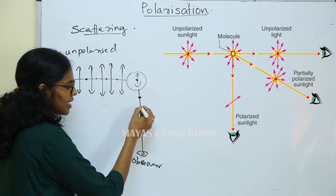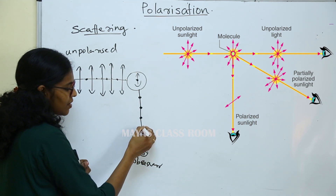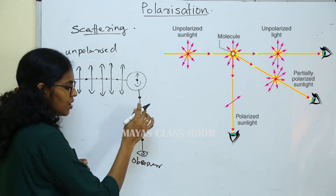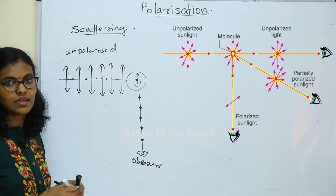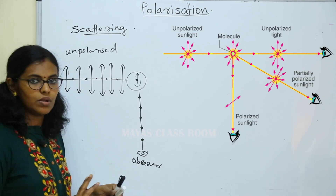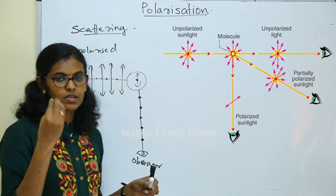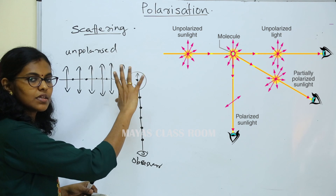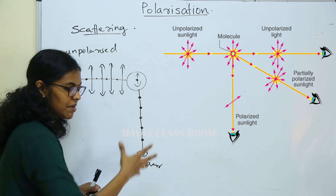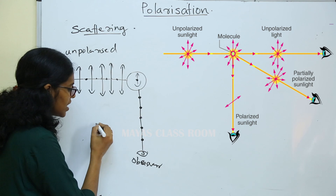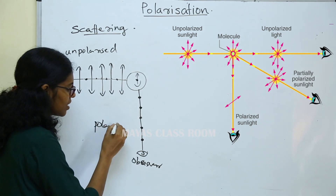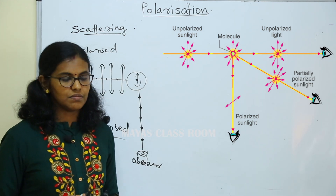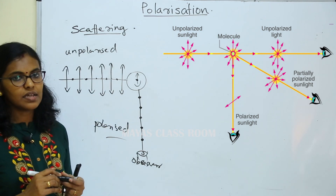If you look at the light, there is a polarized light. We listen to an electric vibration inside the light. Unpolarized light will restrict and produce polarized light. This is the polarization by scattering.